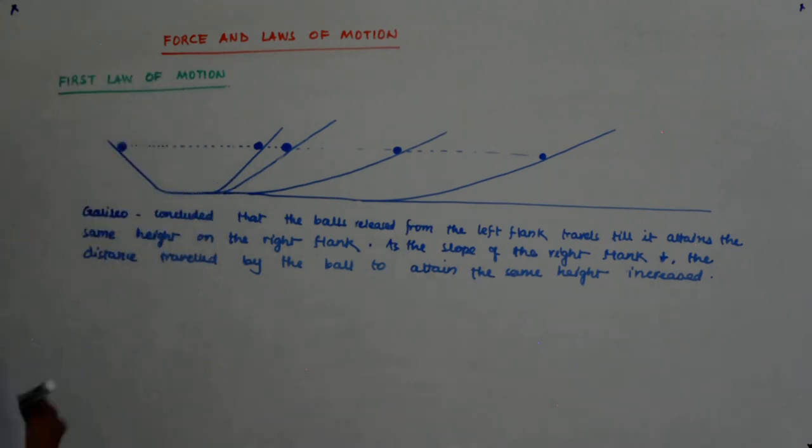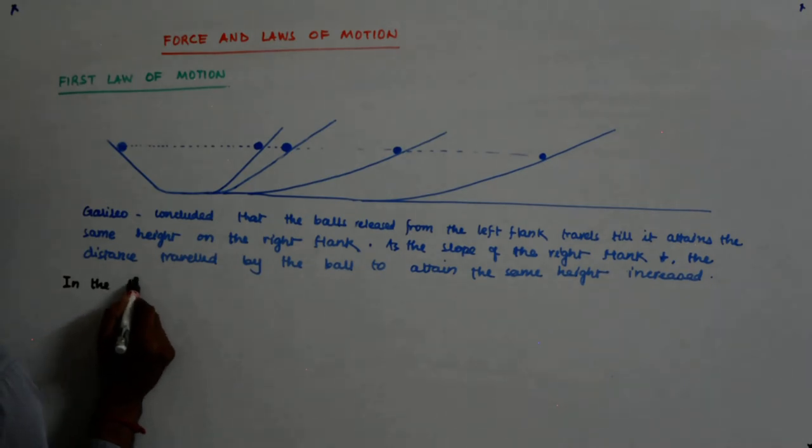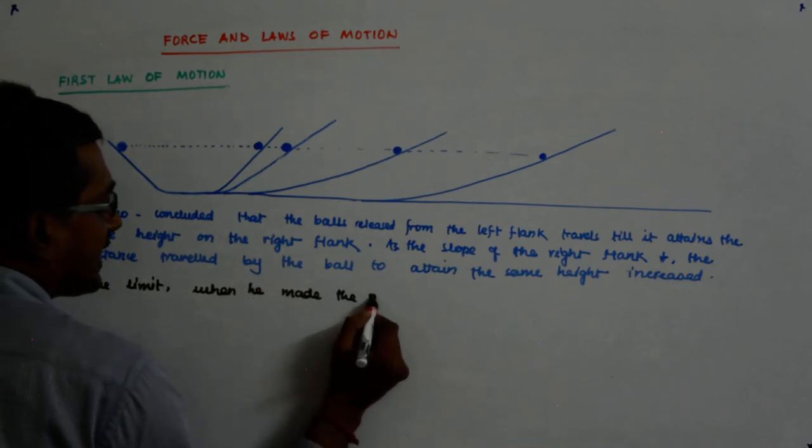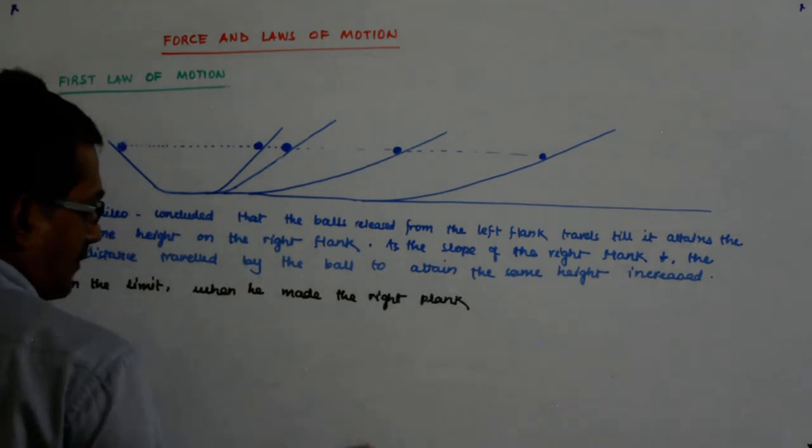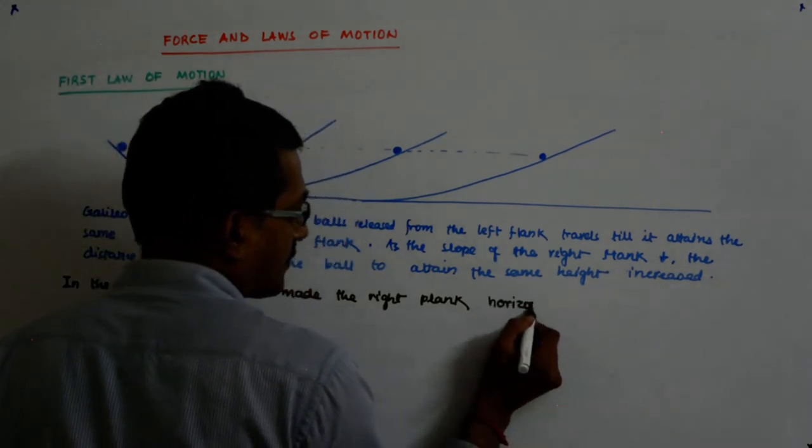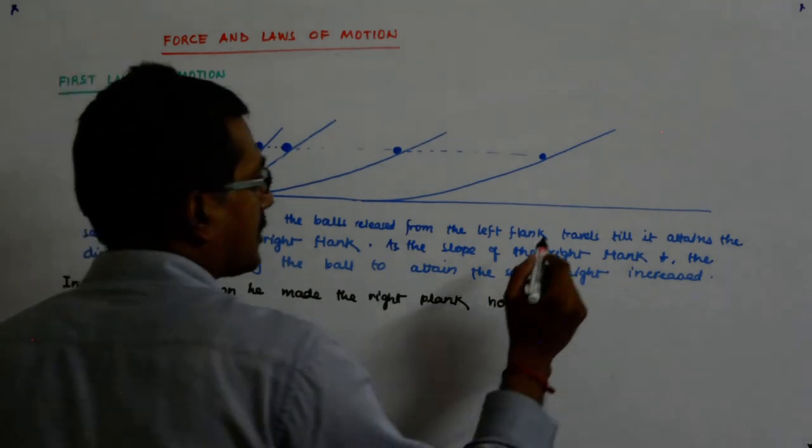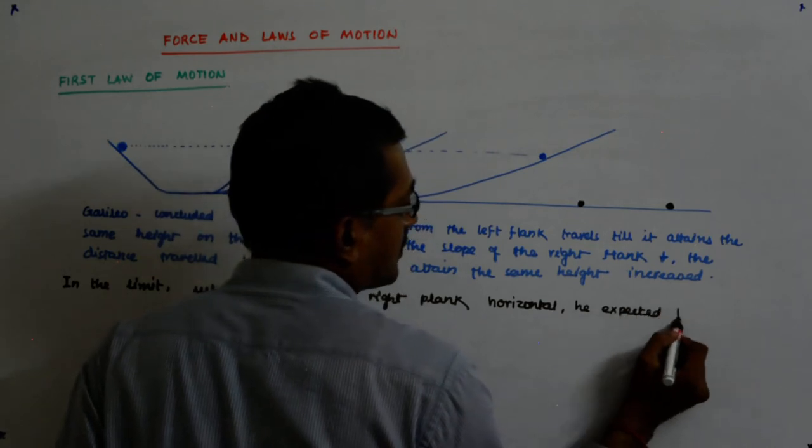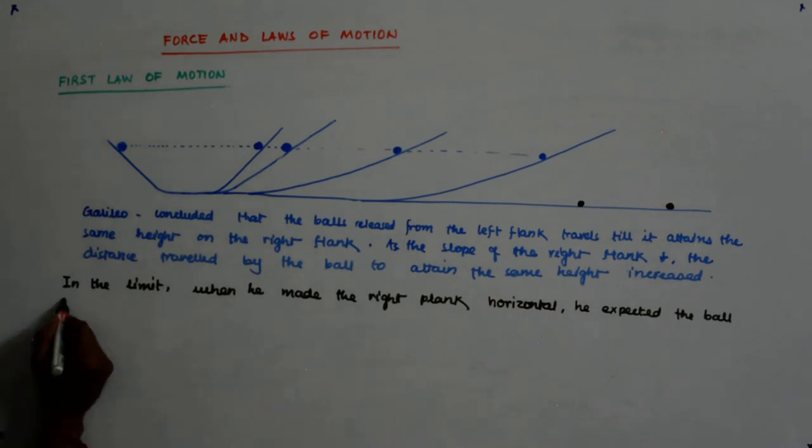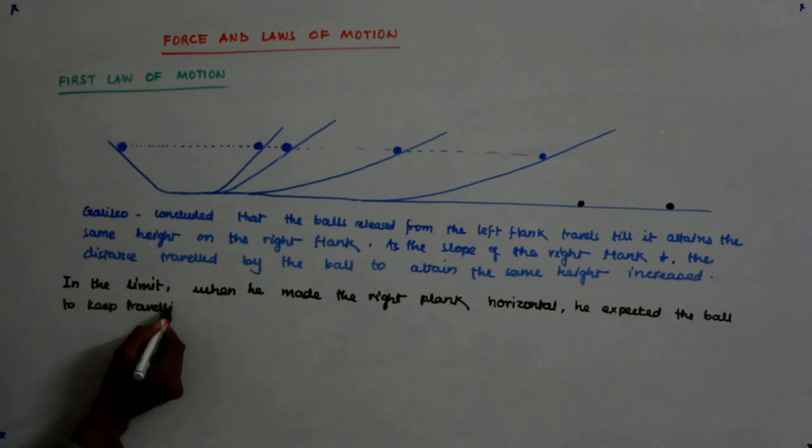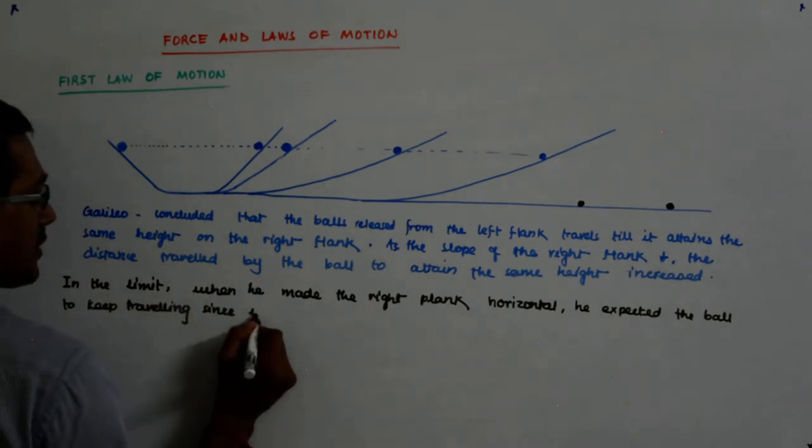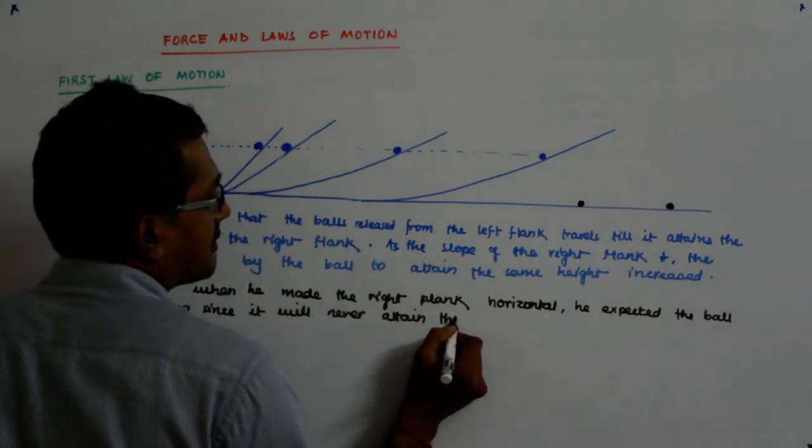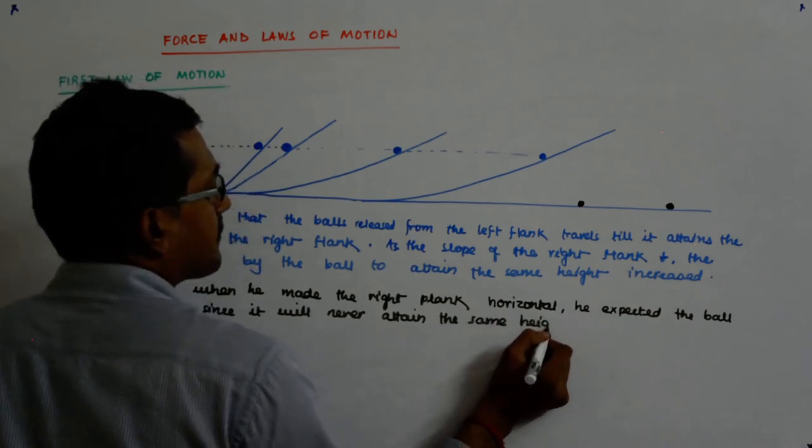Now, in the limit, when he made the right plank horizontal, he expected the ball to keep travelling since it will never attain the same height.